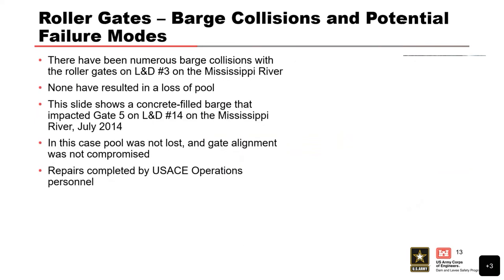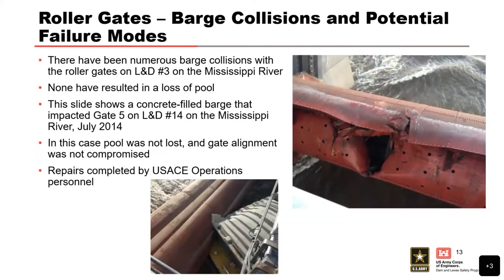Barge collisions on navigation structures happen all the time. None of the barge collisions we have on roller gates and drum gates have resulted in a loss of navigation pool — they're always going to be associated with some economic damage and some downtime. Those are your real consequences. Whenever we're dealing with large river systems, they're not necessarily going to be a risk to life loss.